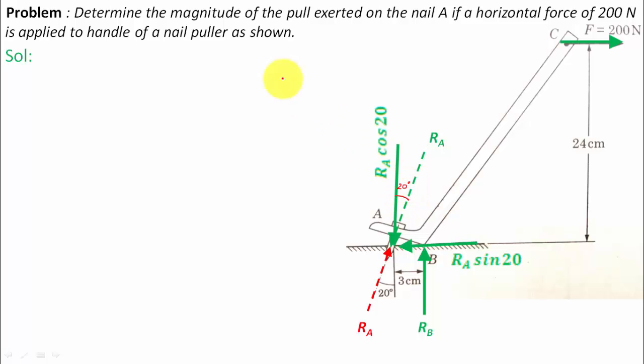What we want is the magnitude of the pull exerted, we want ra. So how can that be carried out? What we're going to be doing is we're going to be taking the moment of all the forces about point B, and right now we're going to be analyzing the nail puller.